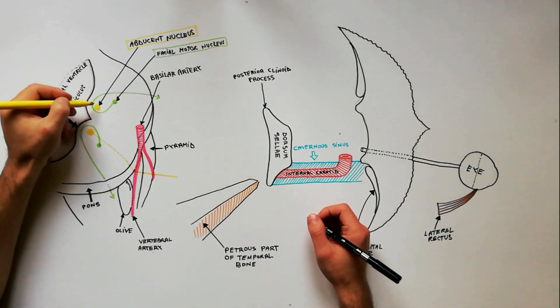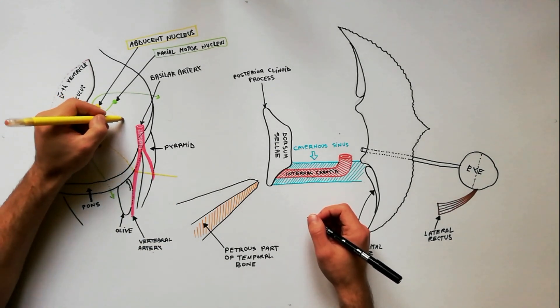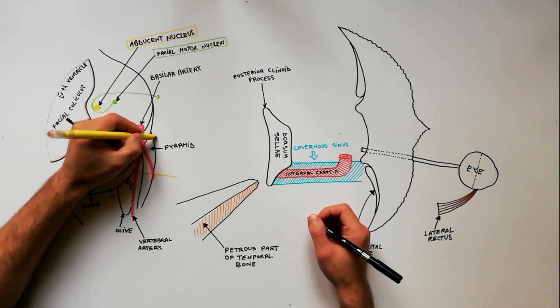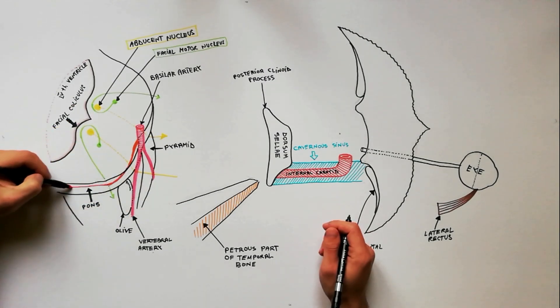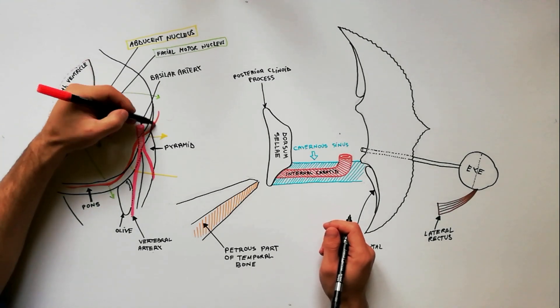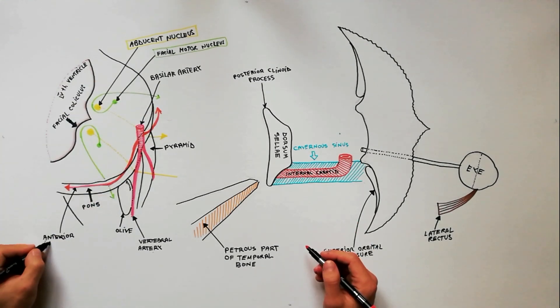At this level, medially to the nerve is the basilar artery, and also closely related to the nerve is the anterior inferior cerebellar artery, which originates from the inferior part of the basilar artery.